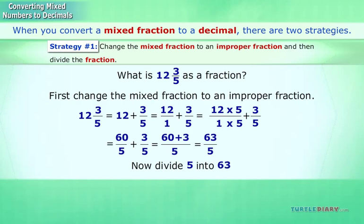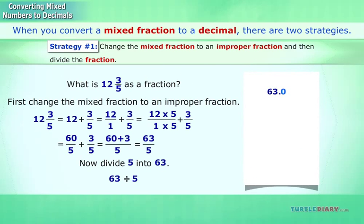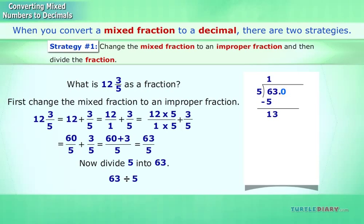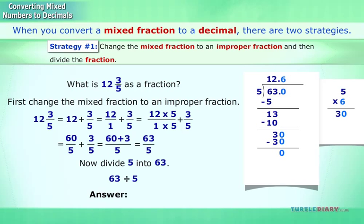Now divide 5 into 63. 63 divided by 5 equals 12.6. Answer: 12.6.